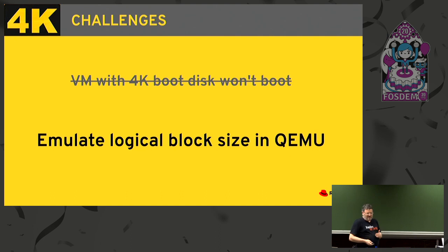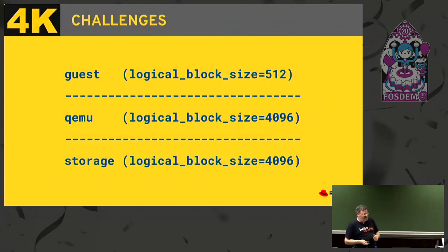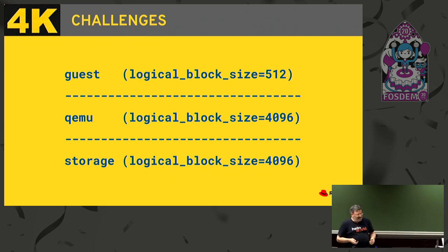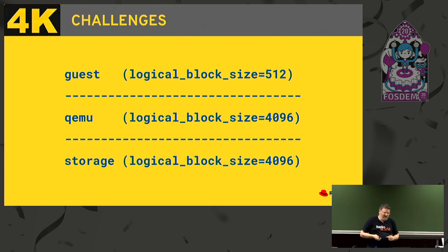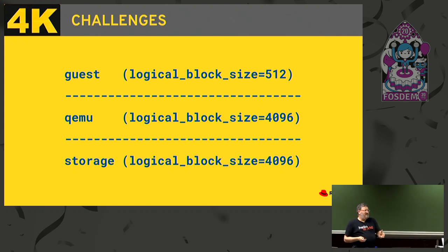Basically what we can provide now is a setup where the guest thinks it's running on a logical block size of 512. QEMU knows the real value, and if the guest is writing something on the wrong alignment, QEMU can fix the write. Of course, this can introduce performance issues, but we don't have any benchmark results yet, so we don't know if it's worse or better than the old way. But with this, you can use 4K storage.